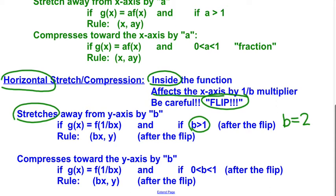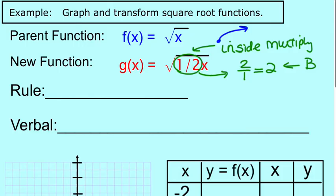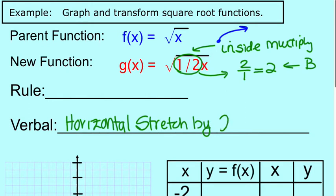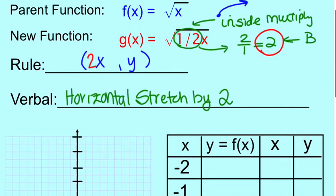So our rule is we're going to multiply our x values by 2 there after the flip. So our verbal is a horizontal, that's your x-axis, stretch by 2. The rule is we're multiplying all the x values by 2, by whatever that b is.